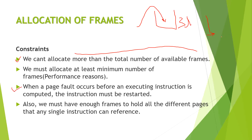Restarting the process will take a significant amount of time. The fourth constraint is that we must have enough number of frames to hold and sustain the continuous flow of execution of a process. These are all the constraints related to frame allocation.